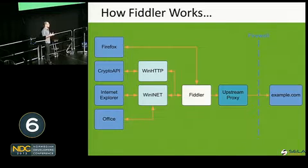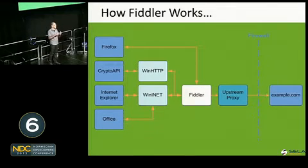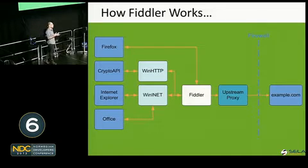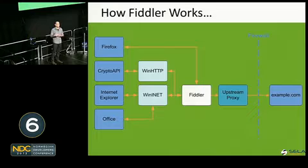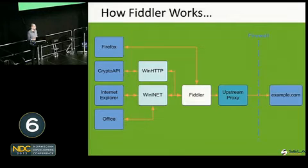We have two basic components in Windows: one is called WinHttp, one is called WinInet. Browsers such as IE and Chrome use WinInet; .NET uses WinHttp. Firefox uses simple web sockets, so Fiddler has a special hook to catch Firefox communication. But basically, Fiddler catches every HTTP communication that goes out from your machine — it can catch almost everything.